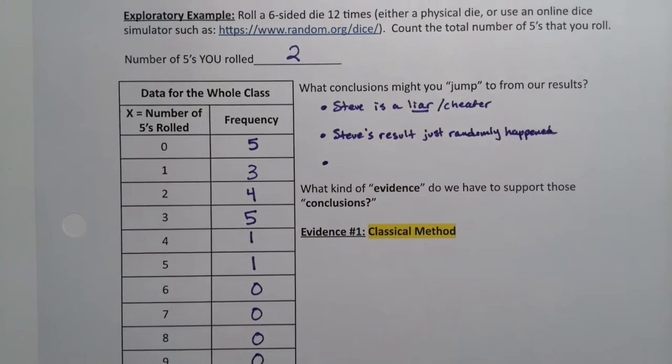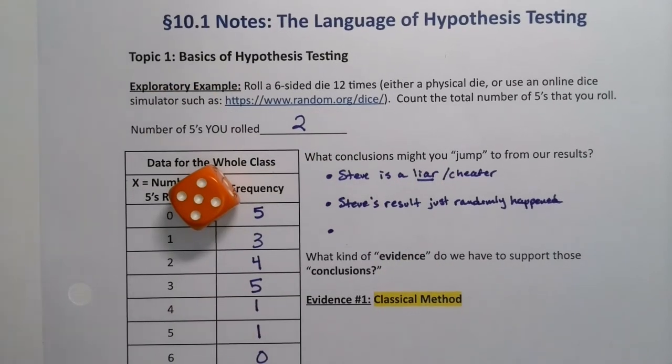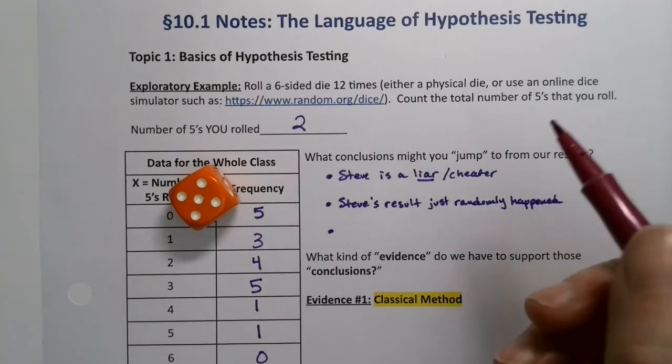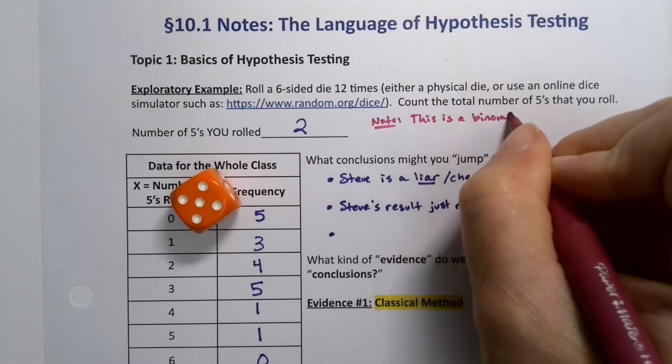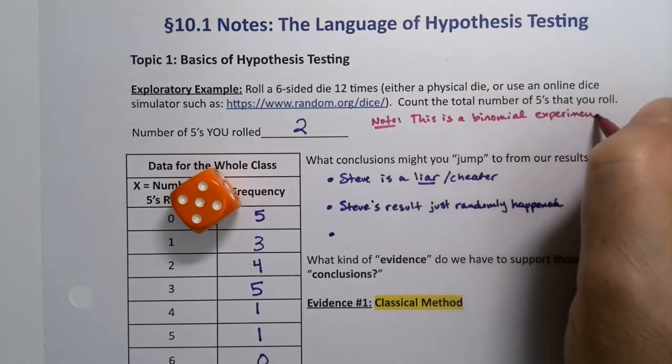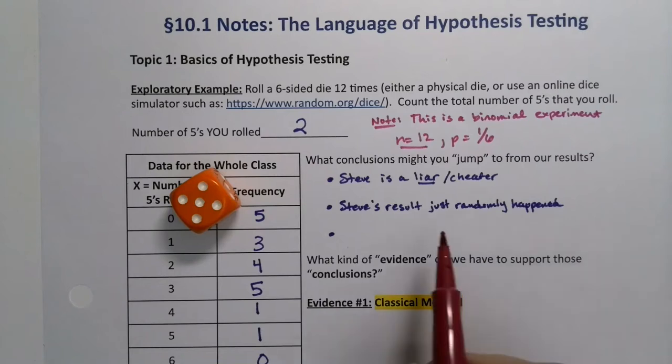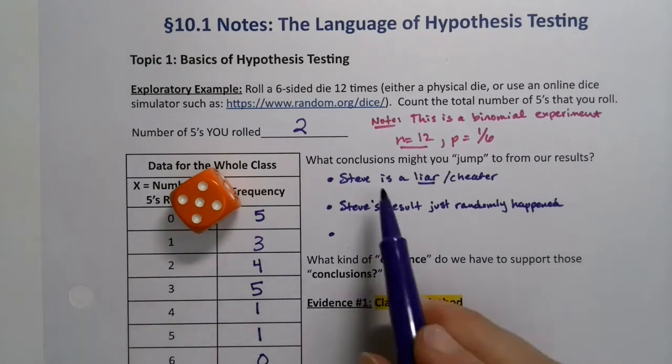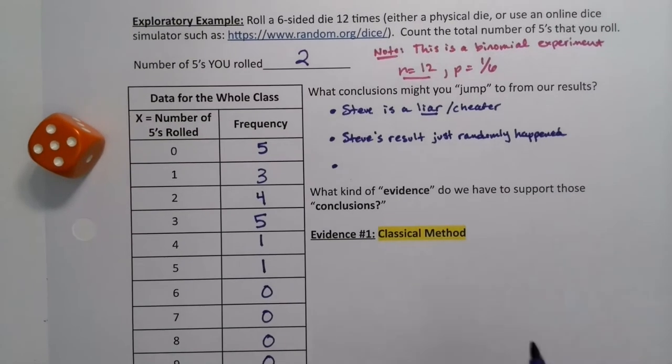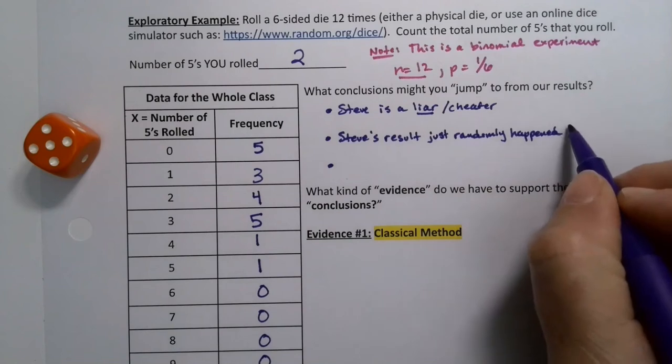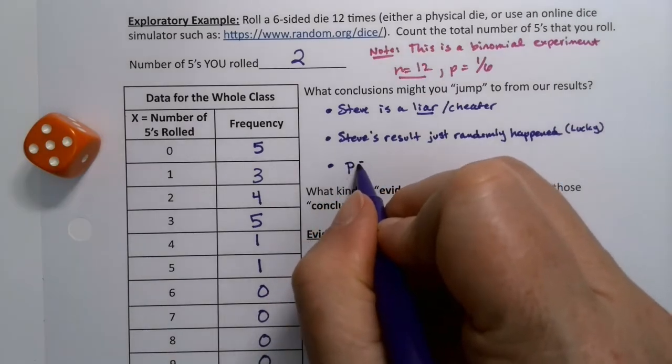Or, and then this is going to take us a moment. When you think about a six-sided die like this, the probability of a 5 is 1 out of 6. This is actually a binomial setup. Remember binomial? So we can make a little note. This is a binomial experiment. That's why I tell you how many times to roll. Because N is 12. P, your probability of success, is 1/6. So there is another option. Steve could be a liar or a cheater. Steve could just have randomly had this happen to him, in which case we need to take him to a casino right away because he's really lucky.